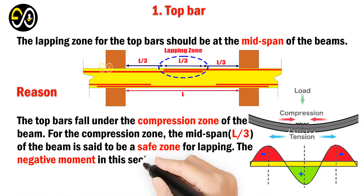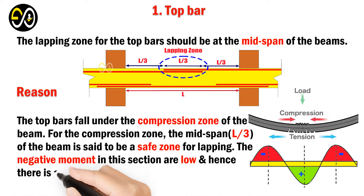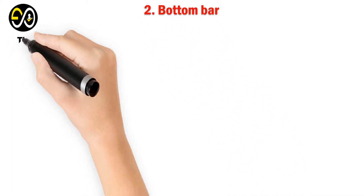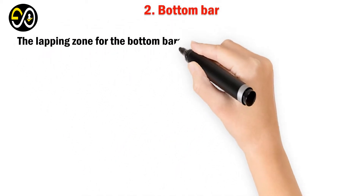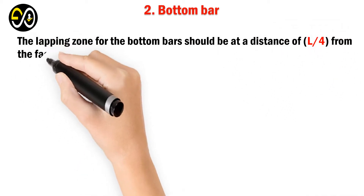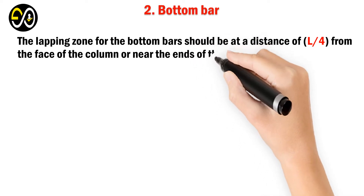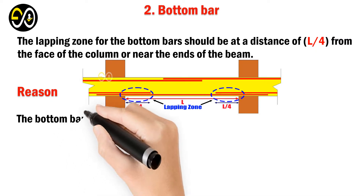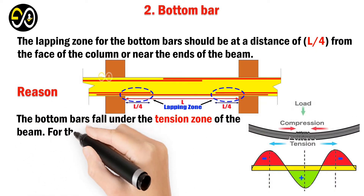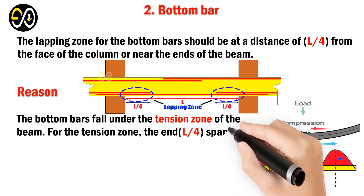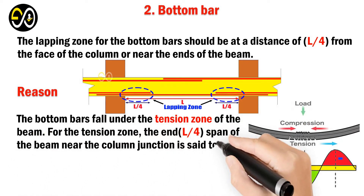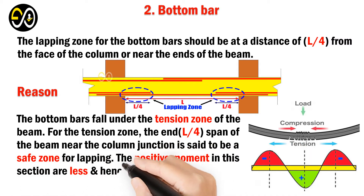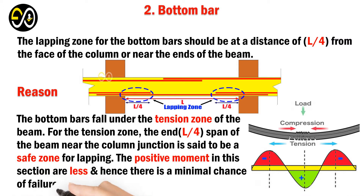The negative moment at the mid-span section is low, and hence there is a minimal chance of failure in this area. For bottom bars, the lapping zone should be at a distance of L/4 from the face of the column, or near the ends of the beam. The bottom bars fall under the tension zone, and the L/4 span near the column junction is a safe zone for lapping, as the positive moment in this section is less, minimizing the chance of failure.